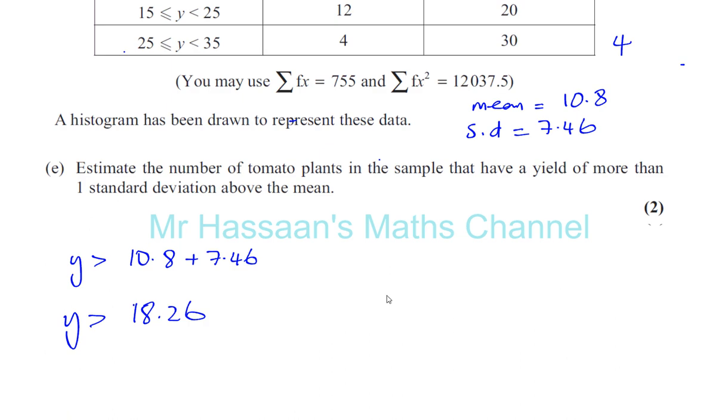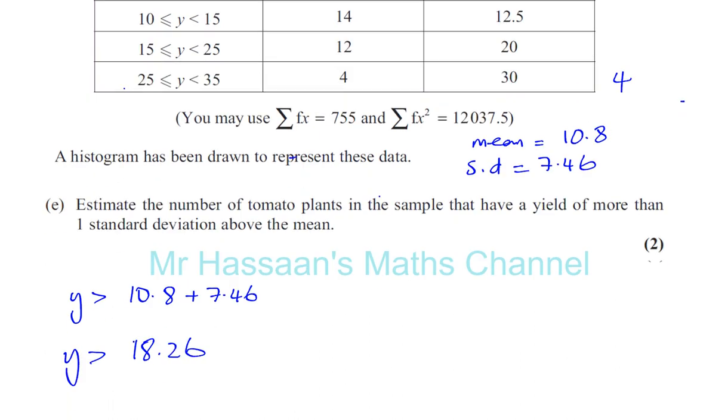We can do some linear interpolation here. We know that the yield from 15 up to 25 - in this section we have 12 plants altogether between 15 and 25 yields. We want to find how many plants have a yield more than 18.26.